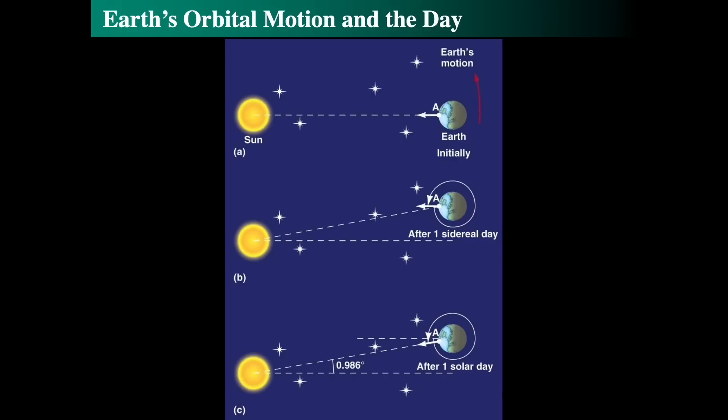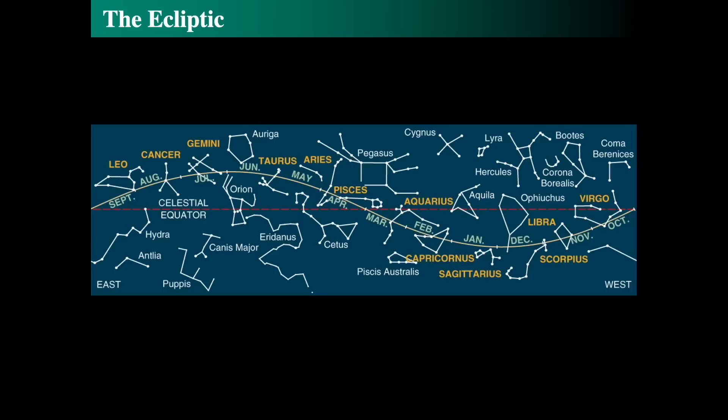As a result of the earth's motion around the sun and the difference between the sidereal and the solar day, the sun appears to move around the sky on a path and that path is called the ecliptic. That is the path the sun apparently takes in the sky because of the difference in time between the solar day and the sidereal day.